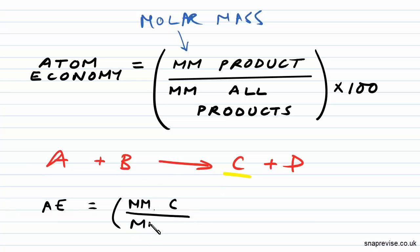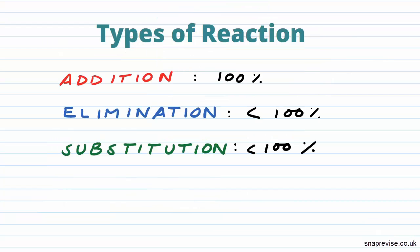So let's look at the generic different types of reactions and their general atom economies. Here we have three types of reactions: addition, elimination, and substitution.